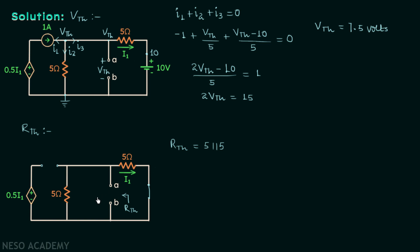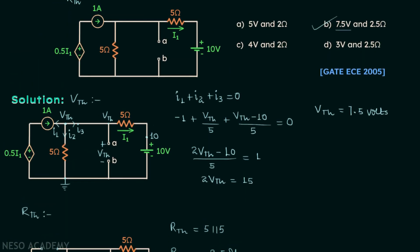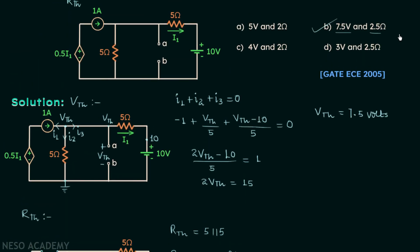Simplifying 5 in parallel with 5, the Thevenin's equivalent resistance Rth equals 2.5 ohms, which matches option B as well.